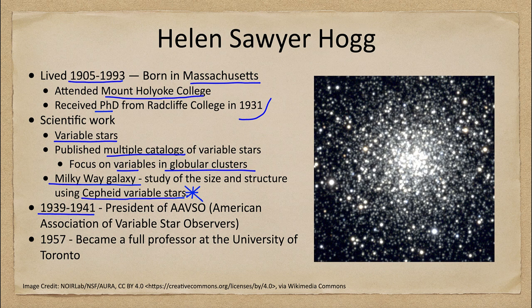Determining distances to stars is something very hard to do — we're doing a lot better now than in the past. Once you can do that, you can learn a lot more about things like the size and structure of our own galaxy, things we did not know well before. This bigger study of variable stars really helped with that. She was president of the American Association of Variable Star Observers for a couple of years and became a full professor at the University of Toronto in 1957. Her strongest contributions were the observations of variable stars over a number of decades.